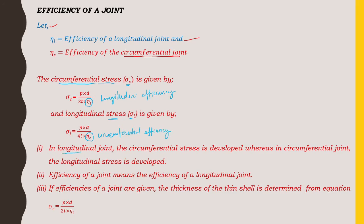In a longitudinal joint, the circumferential stress is developed, whereas in a circumferential joint, the longitudinal stress is developed — it is vice versa. In a longitudinal joint (lengthwise), circumferential stresses come. When circumferential joints (the circular part) are there, the longitudinal stress will be induced.